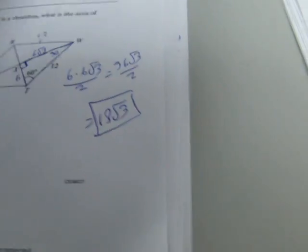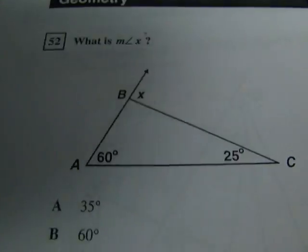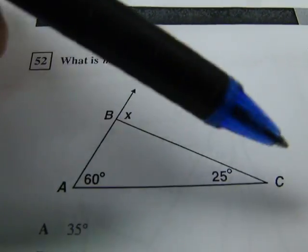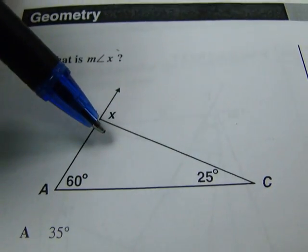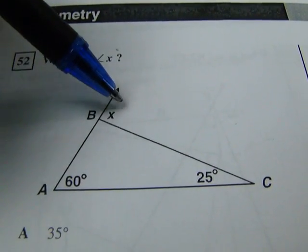On to 52. Here it is. 52 says find the measure of angle X. So what we have here is a triangle and then an exterior angle. So what we're going to do is find this angle and then use linear pairs to find this angle.